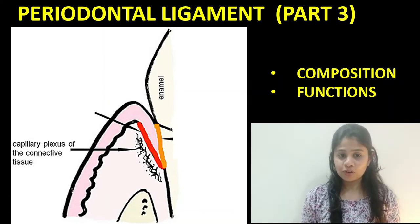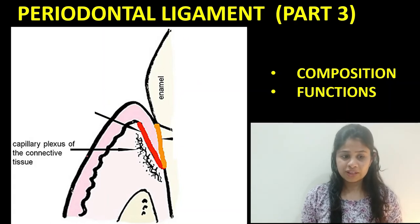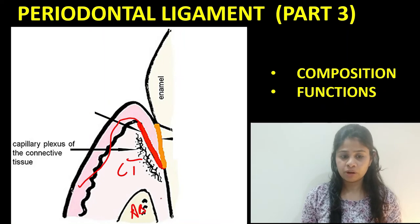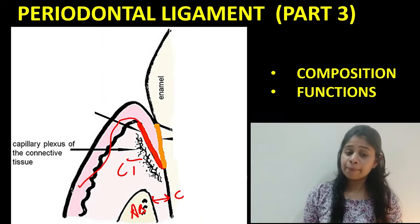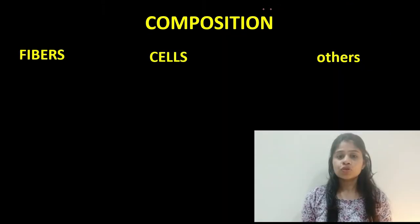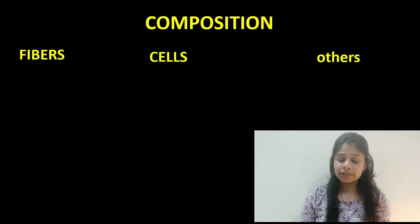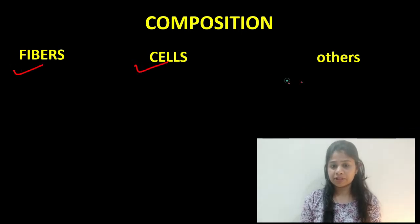As we all know, the periodontal ligament is a part of the connective tissue. The epithelium overlies the connective tissue, underneath which we have the alveolar bone. The space between the alveolar bone and the root cementum comprises the periodontal ligament space. As with any connective tissue, the periodontal ligament comprises fibers, cells, and other substances.